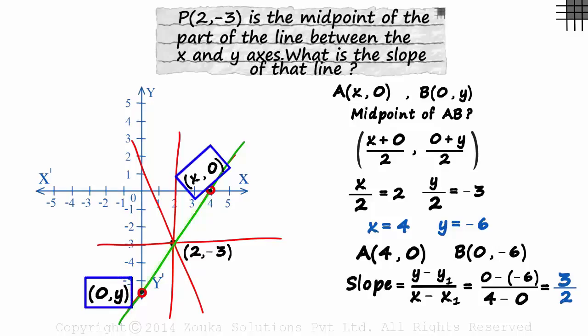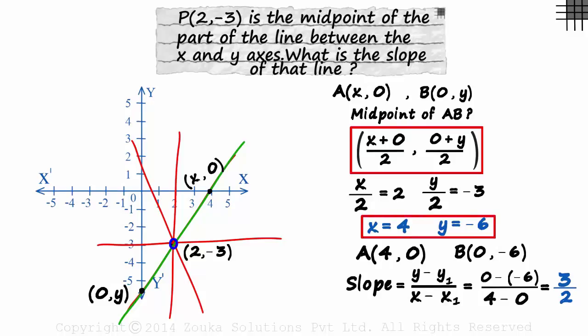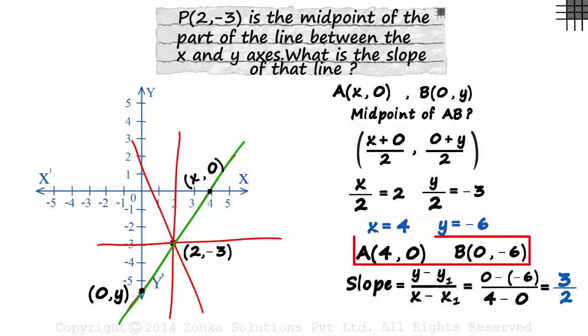We used the midpoint formula and found the values of x and y, and that gave us the coordinates of the endpoints. And with the help of those coordinates, we found the slope of that line.